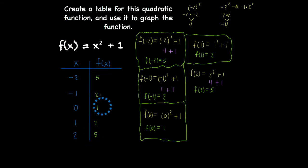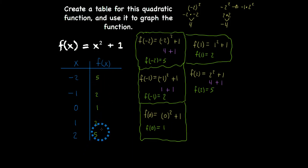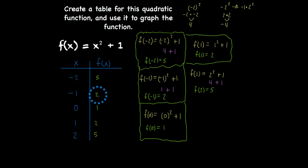You can kind of see a mirroring effect, and we'll look at that in the graph as well. When x is negative 2 or positive 2, f of x — that y value — is positive 5. When x is negative 1 or positive 1, its corresponding value is positive 2. Then we're going to graph this information.